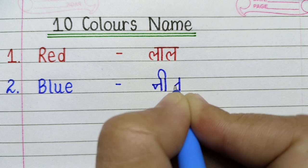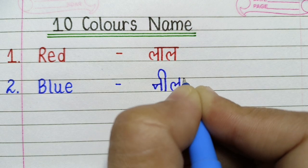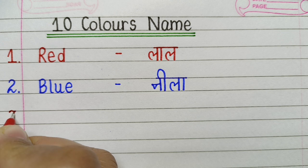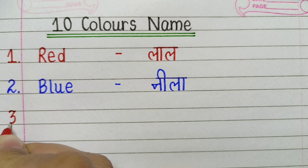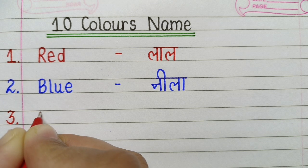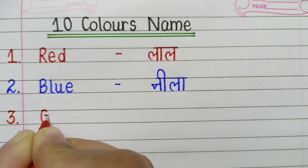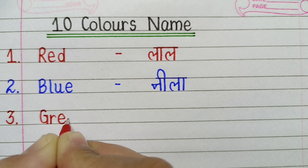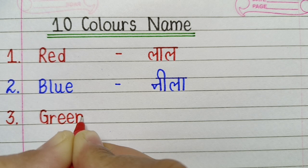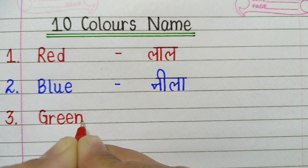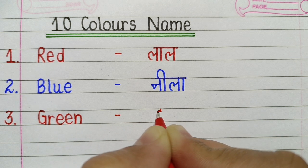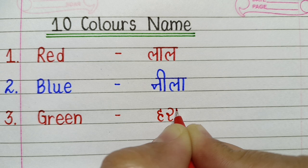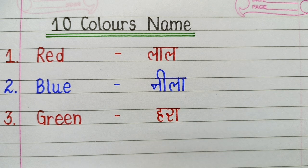B L U E, Blue. Blue means Neela. G R E E N, Green. Green means Harrah.